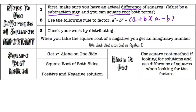You can check your work by distributing. So a times a is a squared, a times negative b is negative ab, then b times a is positive ab, and b times negative b is negative b squared. The middle two terms cancel out because negative ab plus ab is zero, and you're left with a squared minus b squared.